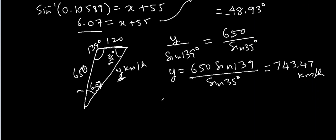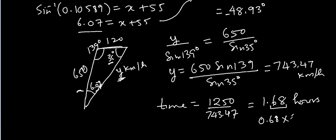And now we have to find time. Time is distance which was 1250 divided by 743.47 which is velocity. That comes out to be 1.68 hours and we want to make this in minutes, so 0.68 times 60, that comes out to be 41 minutes. So the time taken by the plane is 1 hour 41 minutes.